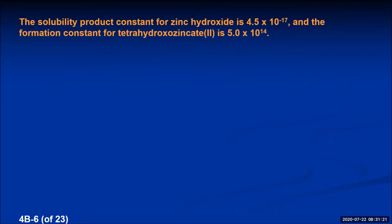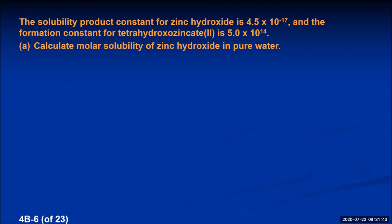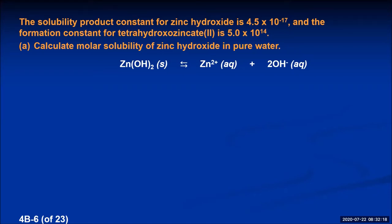Now let's relate this to something we've done before. The solubility product constant for zinc hydroxide is 4.5 times 10 to the minus 17th, and the formation constant for tetrahydroxozincate 2 is 5.0 times 10 to the 14th. First, let's calculate the molar solubility of zinc hydroxide in pure water. That comes from the Ksp. We'll use the solubility product constant and do an ICE table for the reaction of zinc hydroxide dissolving into water, forming zinc ions and hydroxide ions. Molar solubility means what's the molarity at equilibrium in this solution.